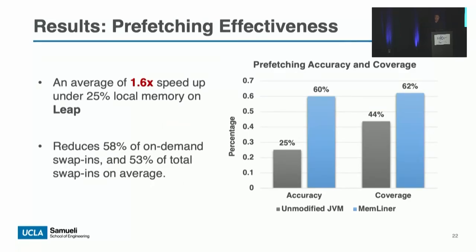To see if Memliner can improve prefetching effectiveness, we also run Memliner with an advanced aggressive OS-level prefetcher, Leap. Memliner improves overall performance by an average of 1.6 times on Leap and reduces 58% of on-demand swap-ins as well as 53% of total swap-ins. We also measure Leap's prefetching accuracy and coverage with and without Memliner, and Memliner helps Leap deliver higher prefetching accuracy and coverage.